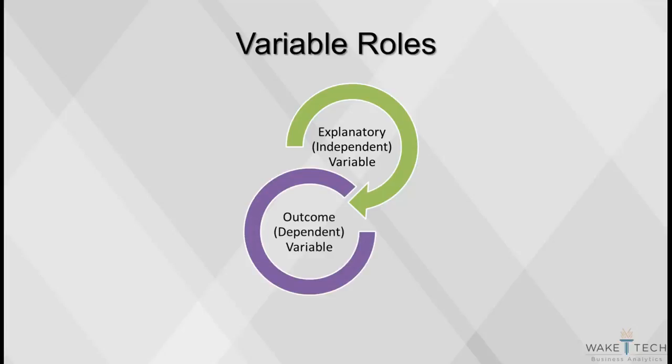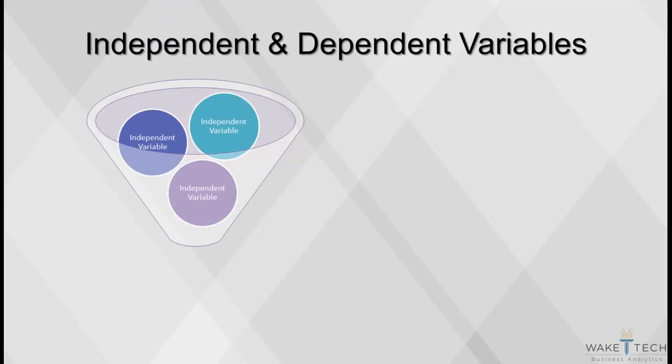The second role a variable can take on is outcome. An outcome variable is also known as a target or dependent variable. These are variables that measure the output or impact that's being studied. Most studies have many independent variables and one dependent variable.